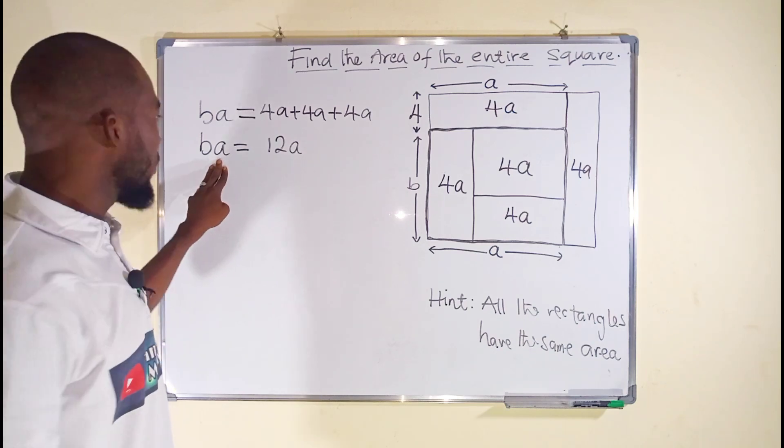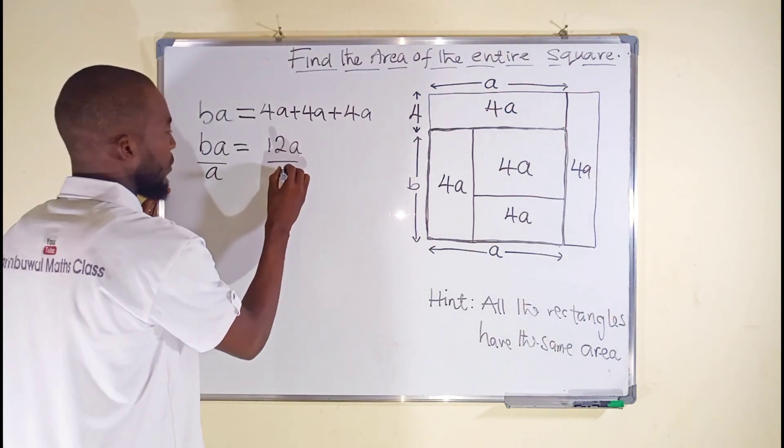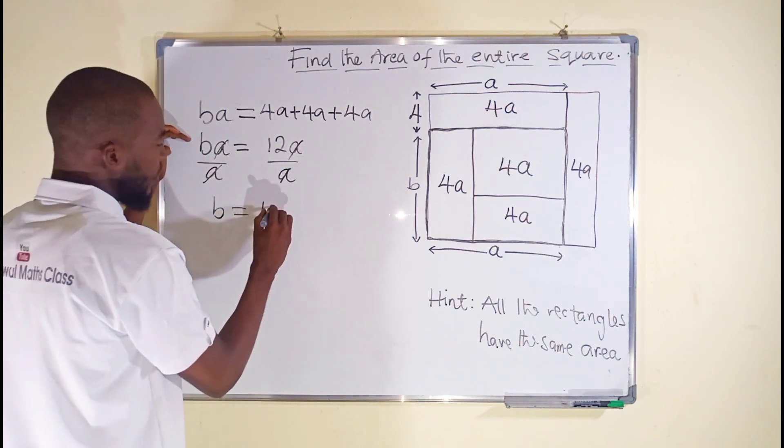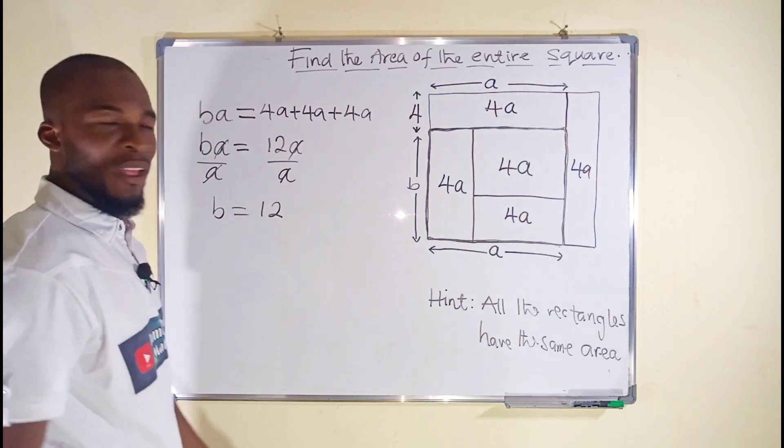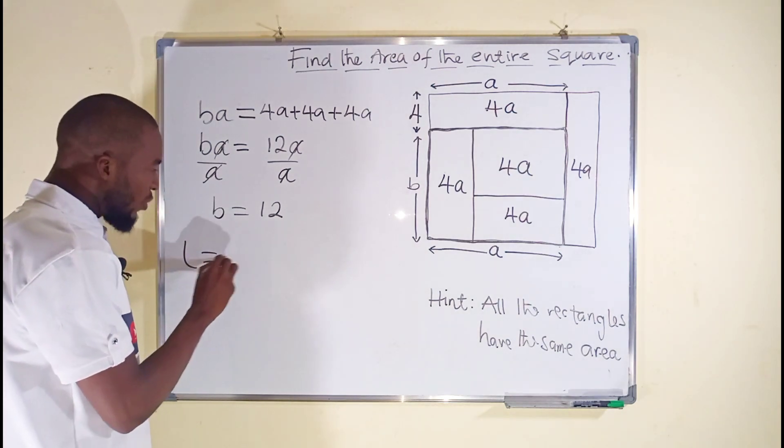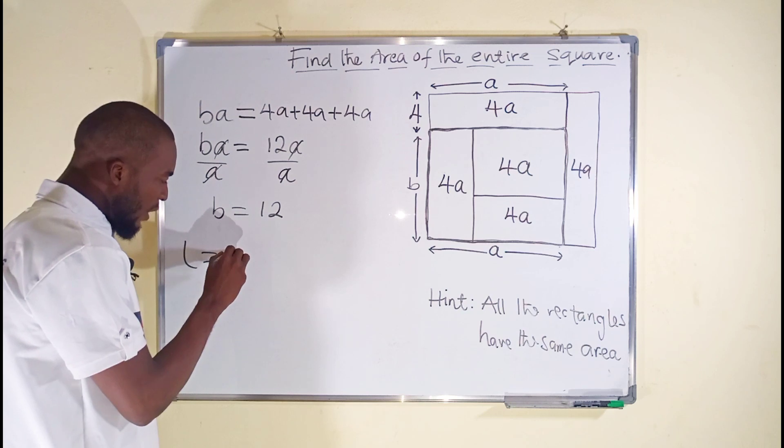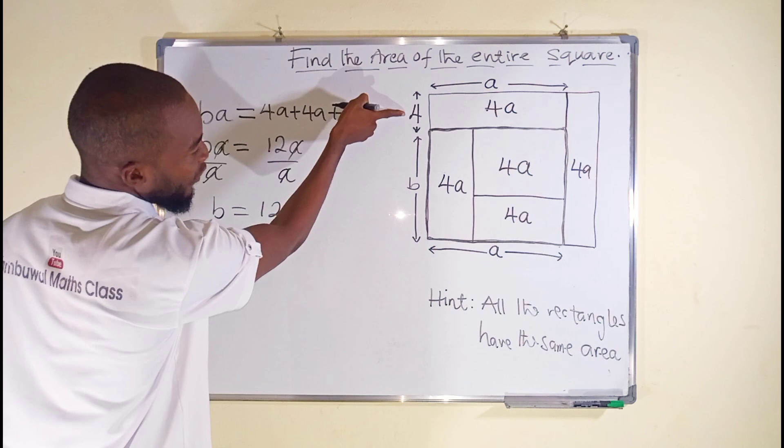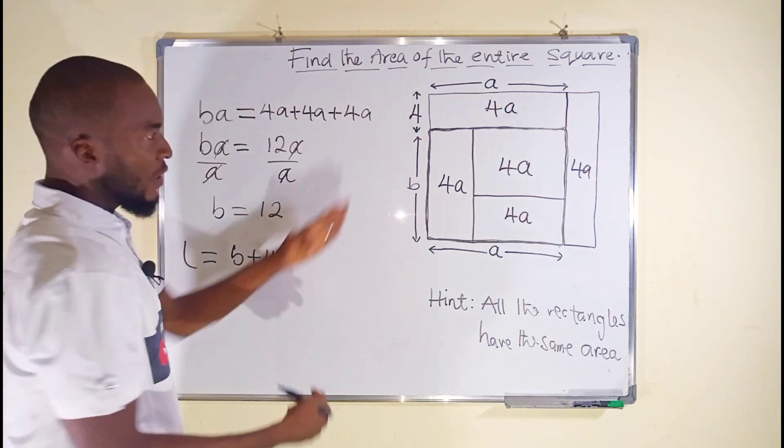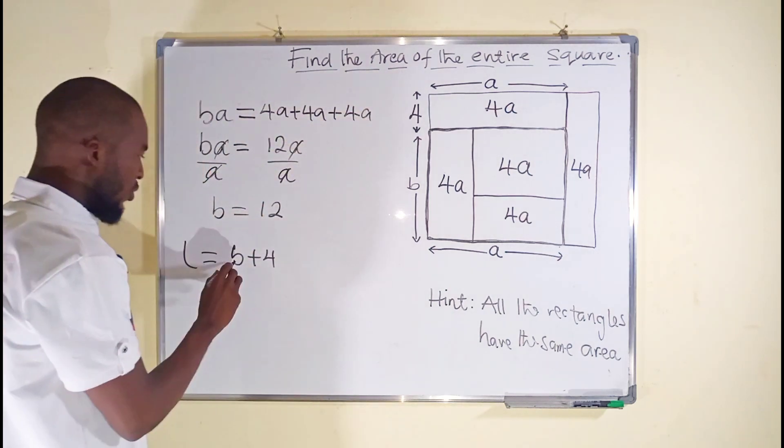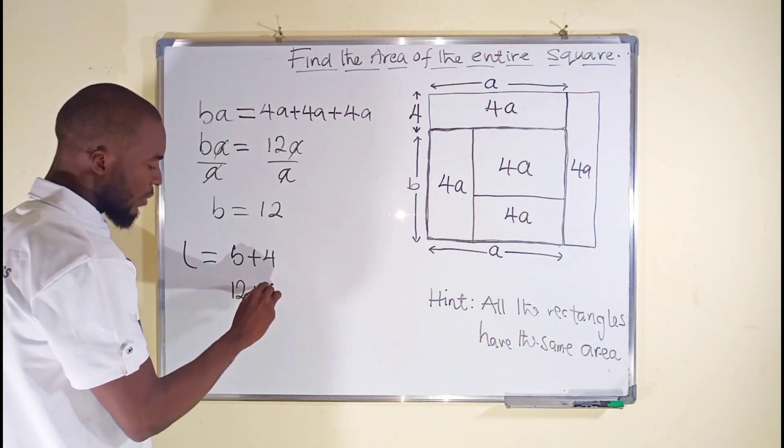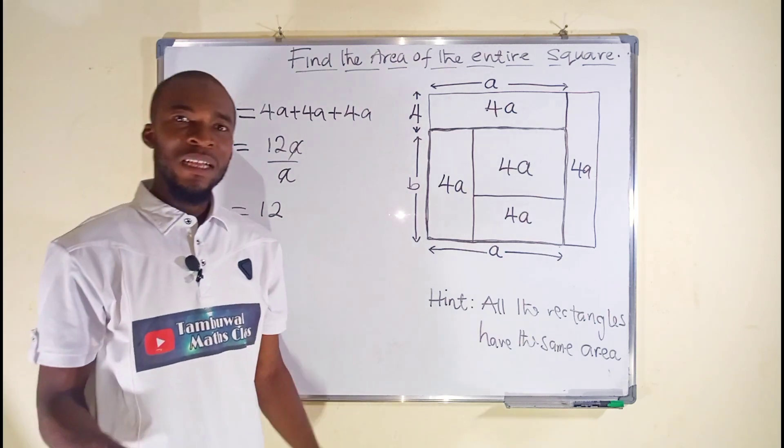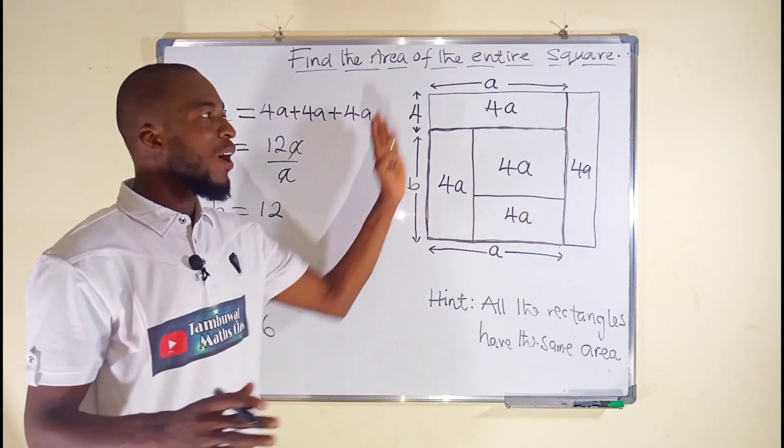a is common, so we can divide both sides. Finally, you can see that b is equal to 12. So therefore the length of this square will be b plus 4, because one of the lengths is given as 4 and the other one as b. If you join them together you get the total length. But b is found to be 12 plus 4, and this is equal to 16.